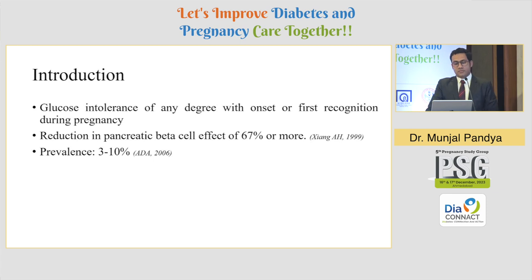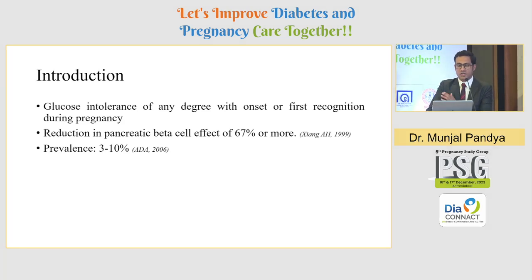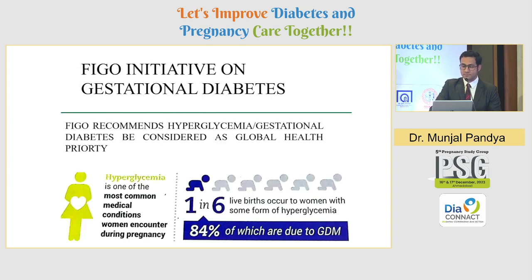Diabetes in pregnancy is something where there is onset or first recognition during pregnancy. Diabetes happens when at least 67% of beta cell function is gone, for whatever reason, leading to insulin resistance or lower production of insulin. The global prevalence is 3 to 10% in pregnancy, but in India it may range from 3 to 21–22%. FIGO, an international association, has declared diabetes a global health priority.